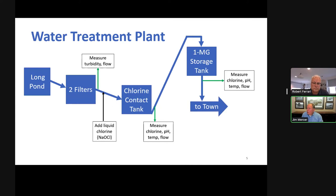This is a schematic of our plant. We have Long Pond. We have two filters that were built in 1939. We have equipment there after the filters that test their turbidity and flow. We add chlorine at that point which goes on to the contact basin and mixes. It's like a large maze so it gets a lot of time for the chlorine to react with the water to kill any pathogens. We measure chlorine pH and temperature after the contact time and flow.